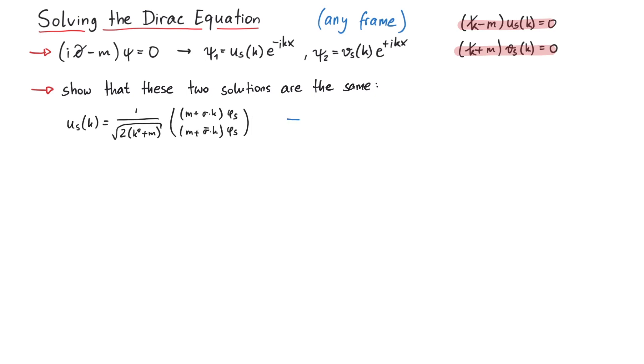Let's focus on the upper two components of u. The rest follows a very similar calculation. On the left, we write the bispinner as we calculated it in this video, including the normalization. And on the right, we put the square root of k times sigma.